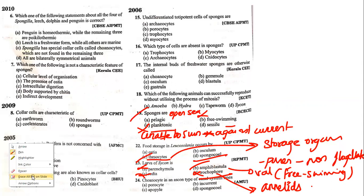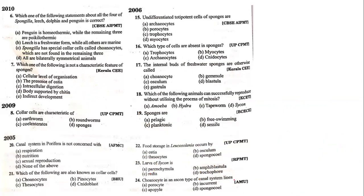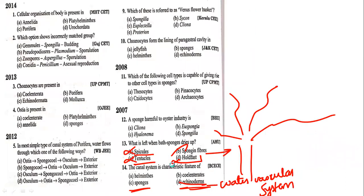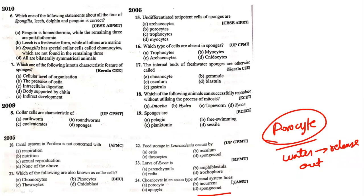Last question: choanocytes in an ascon type of canal system line which structure? They line the spongocoel. Porocytes are the pores where water passes to the canal — similar to osculum already. Apopyle — I didn't search for that. 'No current' is wrong because a water current is present. So the answer is spongocoel.